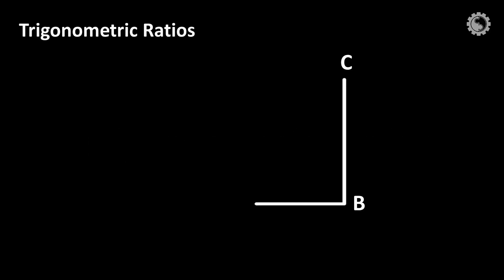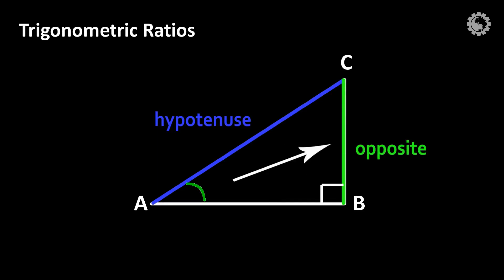Consider a right triangle ABC. The longest side AC is the hypotenuse. It is opposite to the right angle ABC. The opposite side is the one across from a given angle theta, and the adjacent side is next to a given angle.